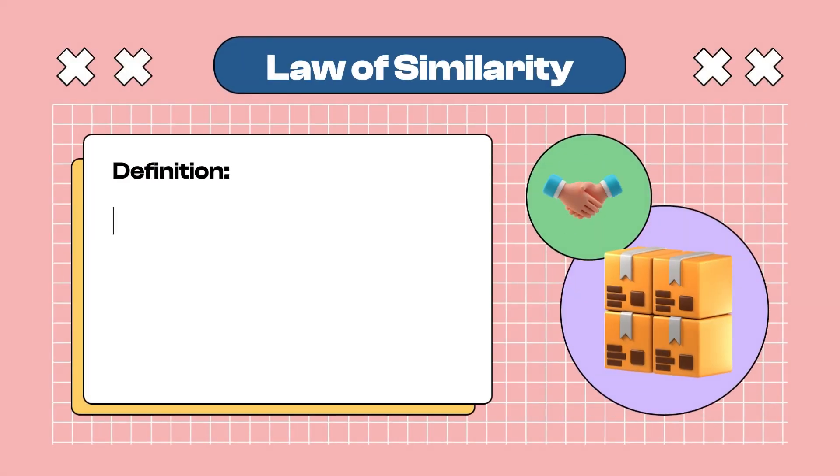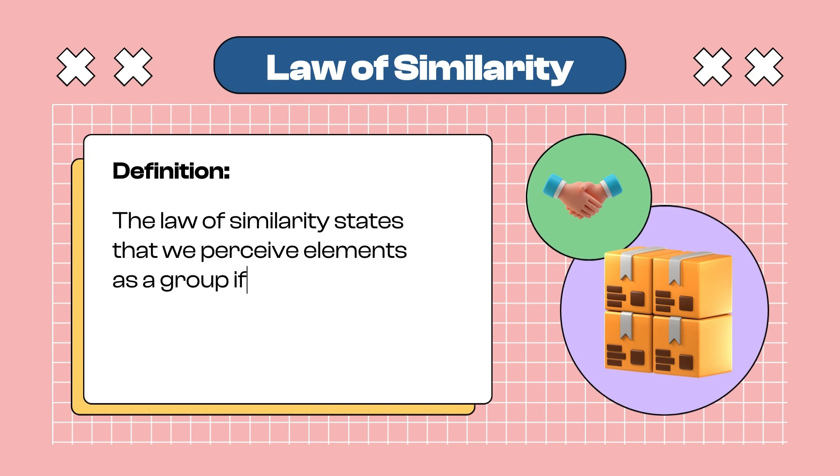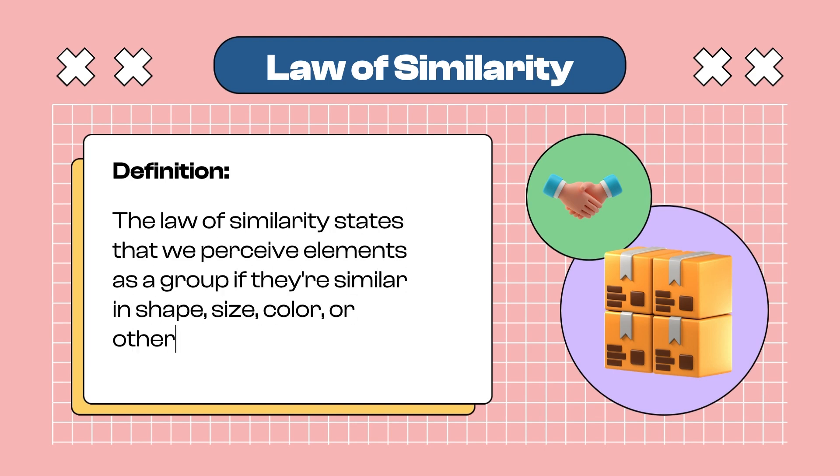Law 2: The Law of Similarity states that we perceive elements as groups if they are similar in shapes, color, size, or other characteristics. Elements with similar characteristics like shape, size, or orientation are perceived as belonging to the same group.